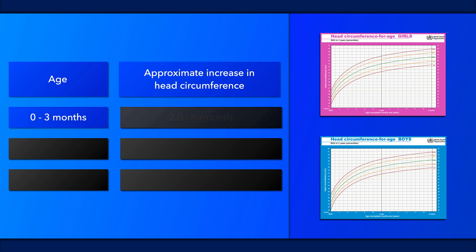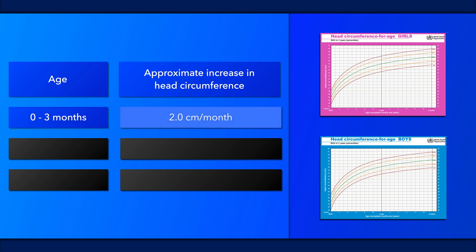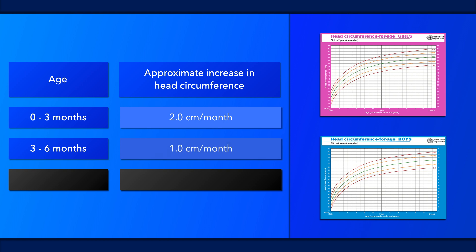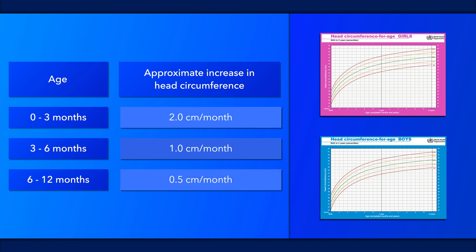During the first three months of life, head circumference increases by about two centimeters per month. Between the third and sixth months, the average increase in head circumference is about one centimeter per month. And between the sixth and twelfth months, it increases by about half a centimeter per month.